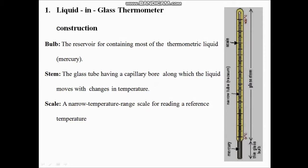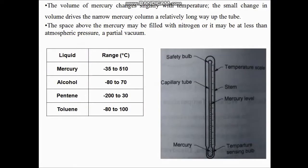Other than mercury, we can use toluene, alcohol, or pentane depending on our requirement. Mercury can operate between −35 to 510°C. For alcohol the range is −80 to 70°C. For pentane the range is −200 to 30°C, and for an alkaline liquid the range is −80 to 100°C.